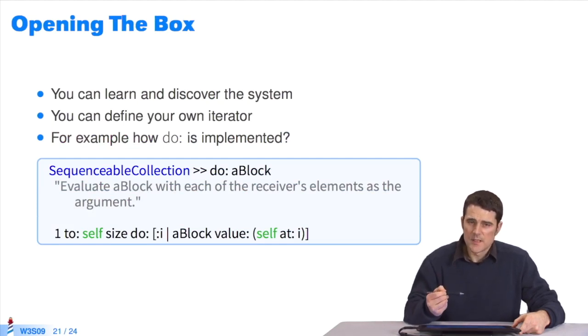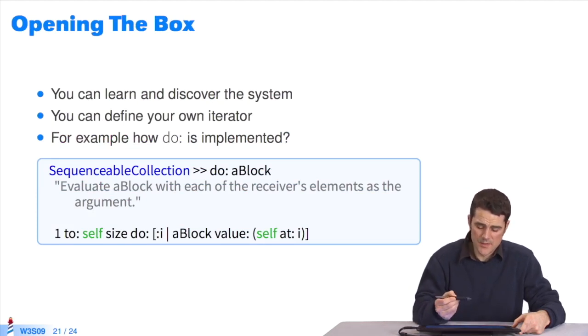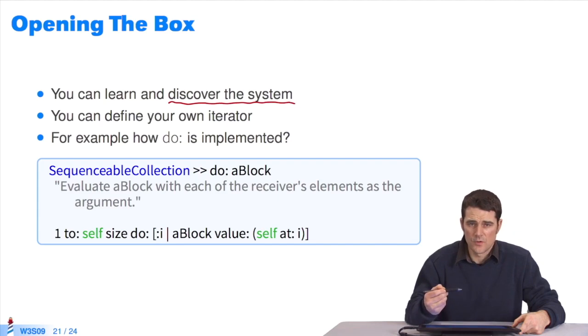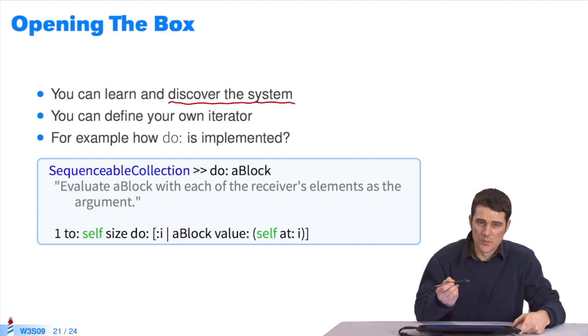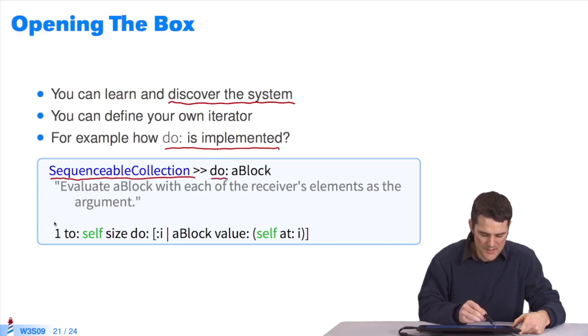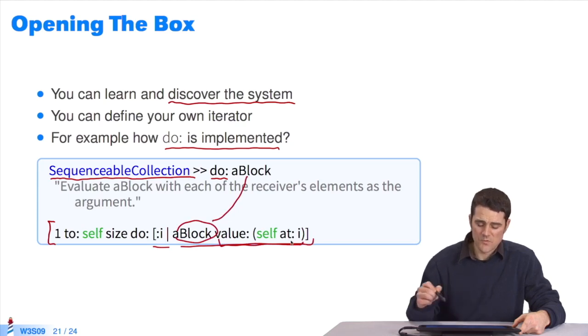I don't intend to tell you about every Pharo iterator. It'd be long and unpleasant. I just want to show there are many. You can define your own by reading about collection classes. Find out about them. For instance, start with the iterators you already know. You can wonder how do is implemented. I look for it in the hierarchy of collections. I realize it's implemented as sequenceable collection. The method do selects a block as its parameter. This is the collection's implementation: 1 to self size do i, a block. I evaluate the block used as the parameter by passing it the element i. It's very easy.